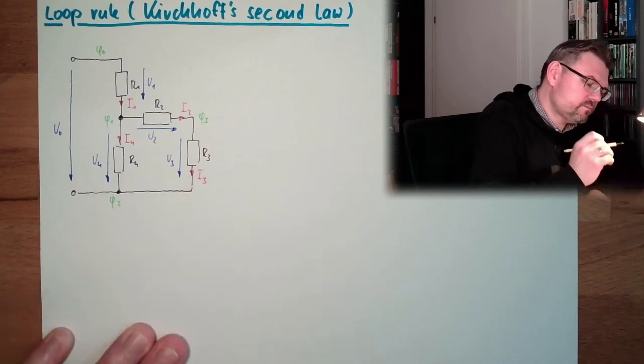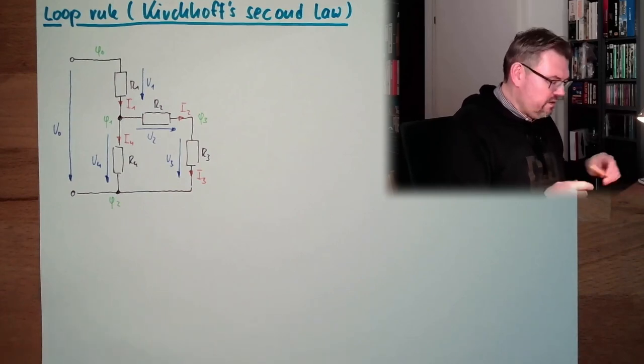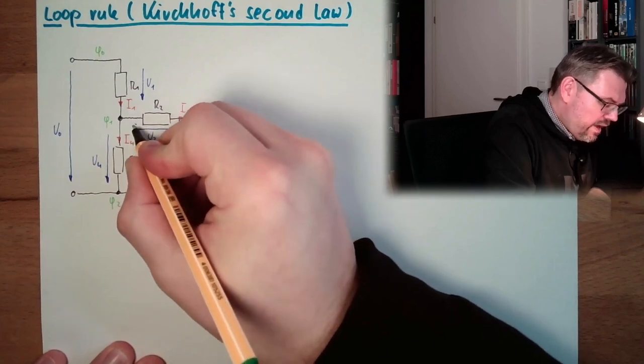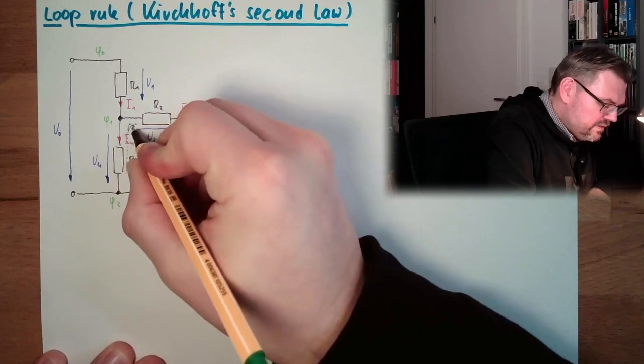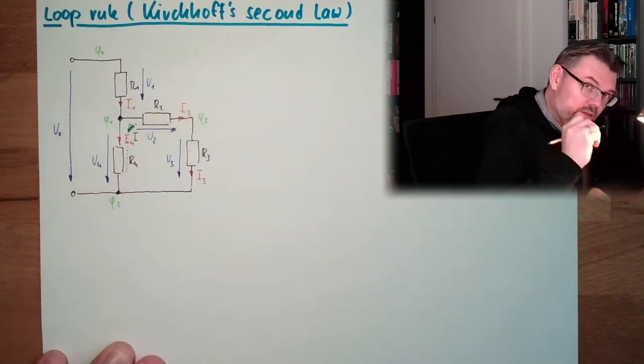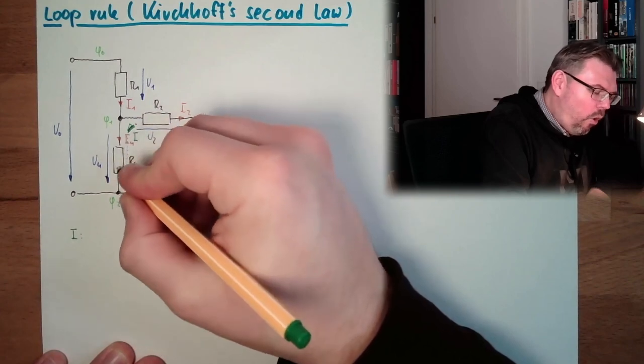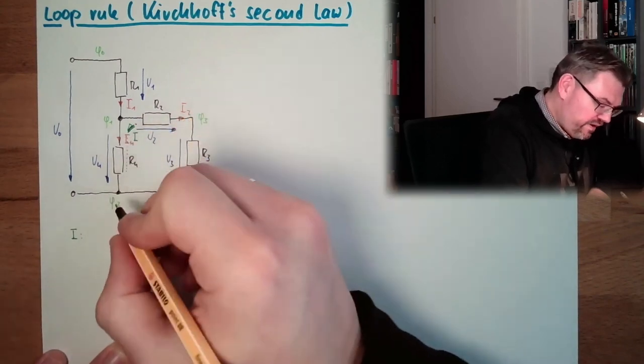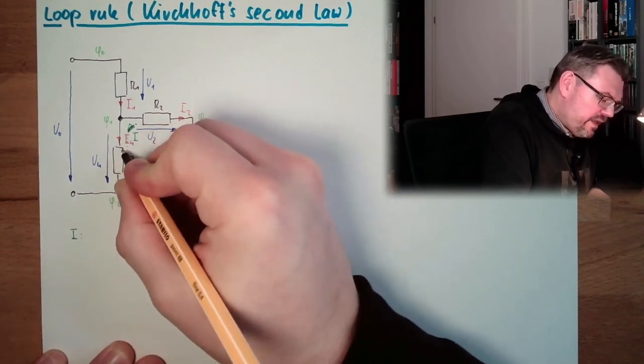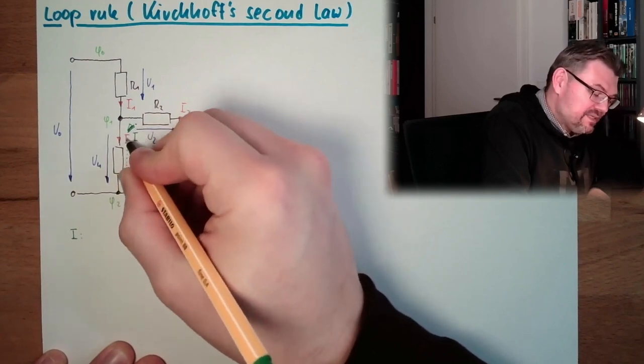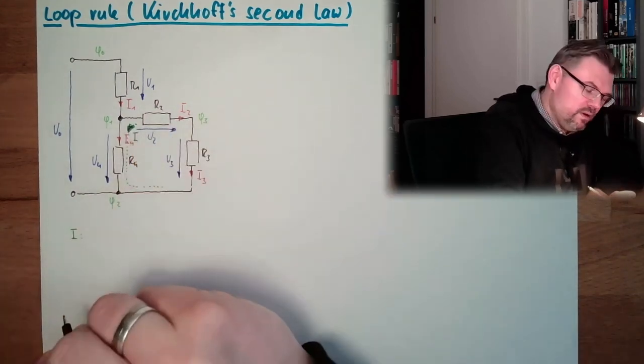The voltages are the potential differences between those potentials. Now if we would start here and we are going down, we say this is the direction, this is loop number one.